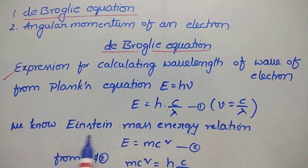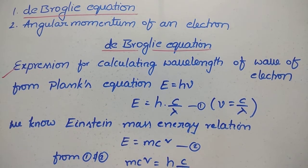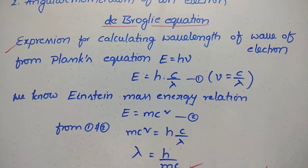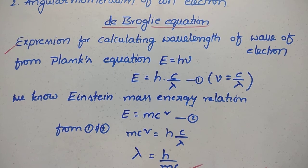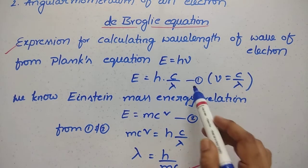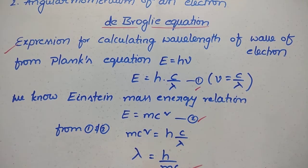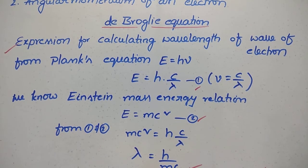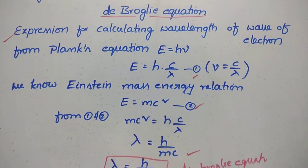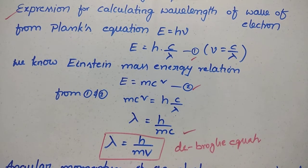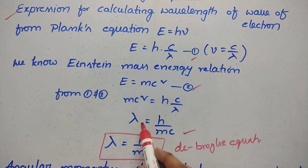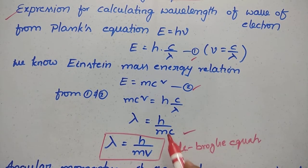We know Einstein's mass-energy relation — everybody knows it — E equal to mc squared. So if we combine these equations, mc squared is equal to h into c by lambda. From there, you can get lambda equal to h by mc.